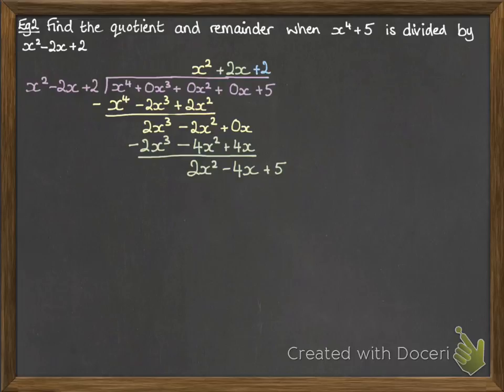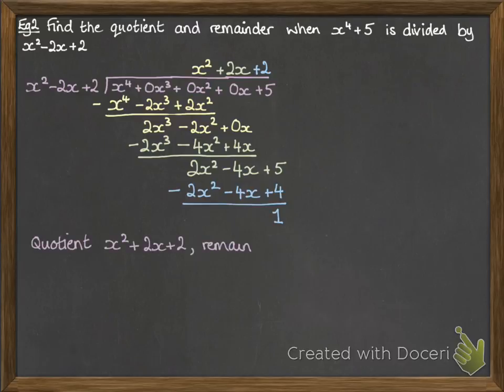We need to multiply it by 2. So if we times that divisor through by 2, we get this. And we will subtract to find our remainder. And we can't carry on any further than that. So that's our final remainder. So our quotient is x squared plus 2x plus 2 and our remainder is 1.